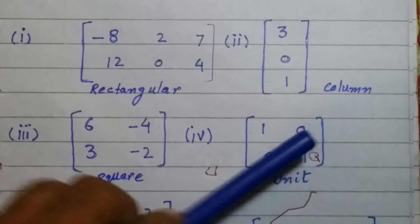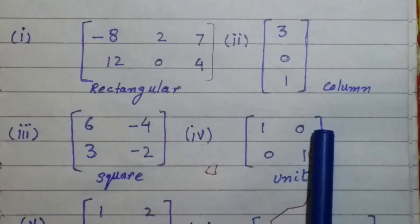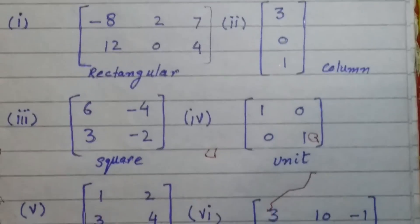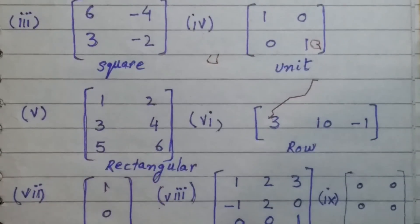Here again it is a unit matrix because it has one in its diagonal and all other elements are zero, so it is a unit matrix. Moving further to other matrices.